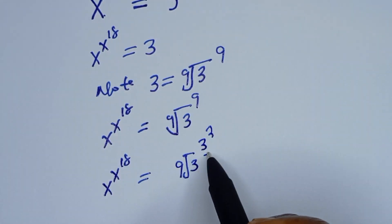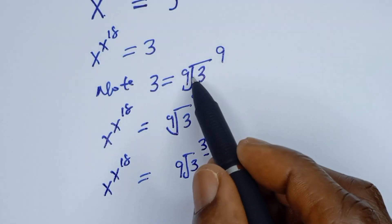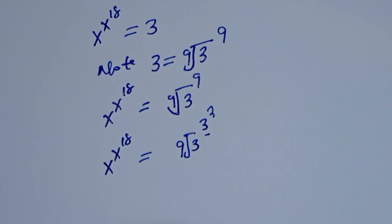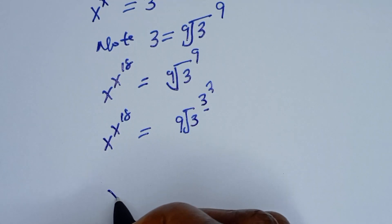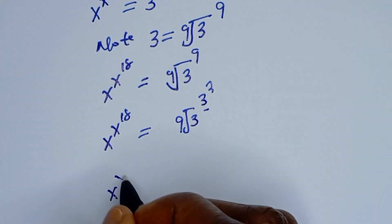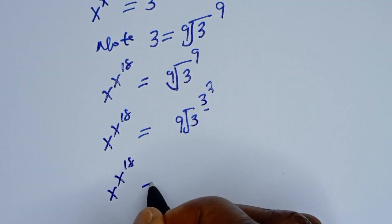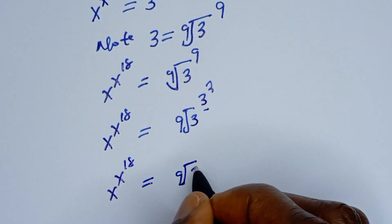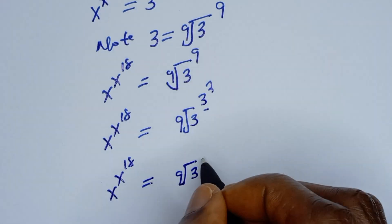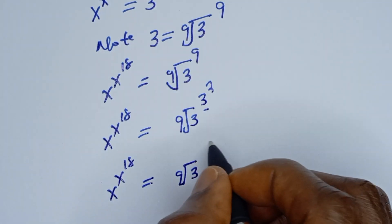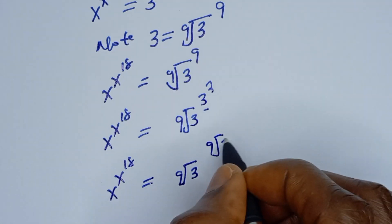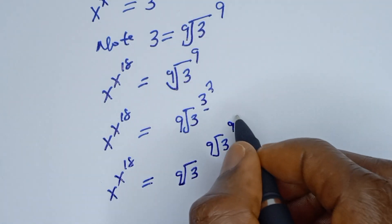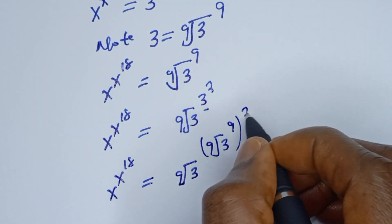This expression is the same thing as this. So let's replace: x to the power of x to the power of 18 is equal to the 9th root of 3 to the power of the 9th root of 3 to the power of 9, then squared.